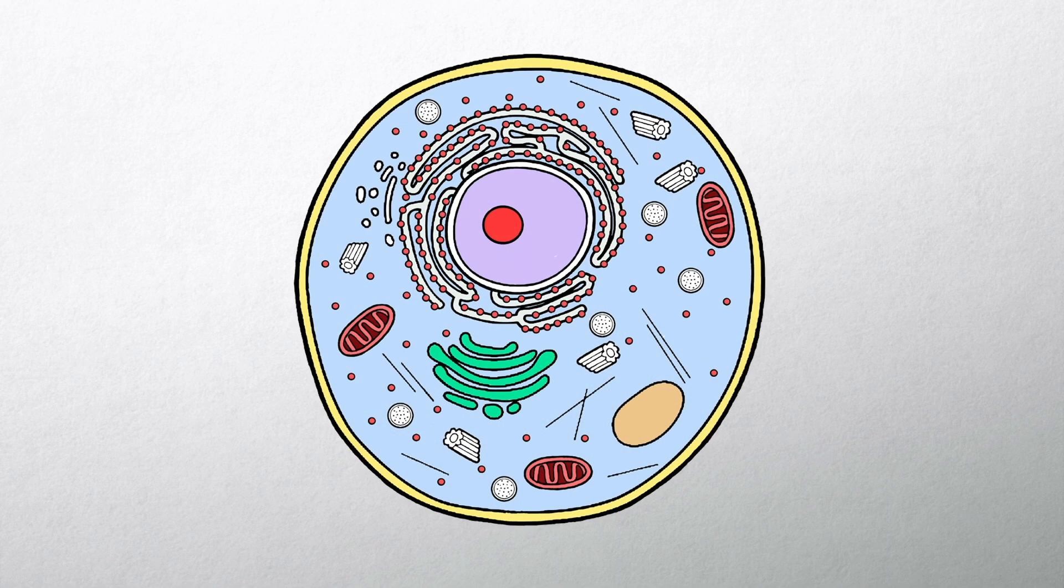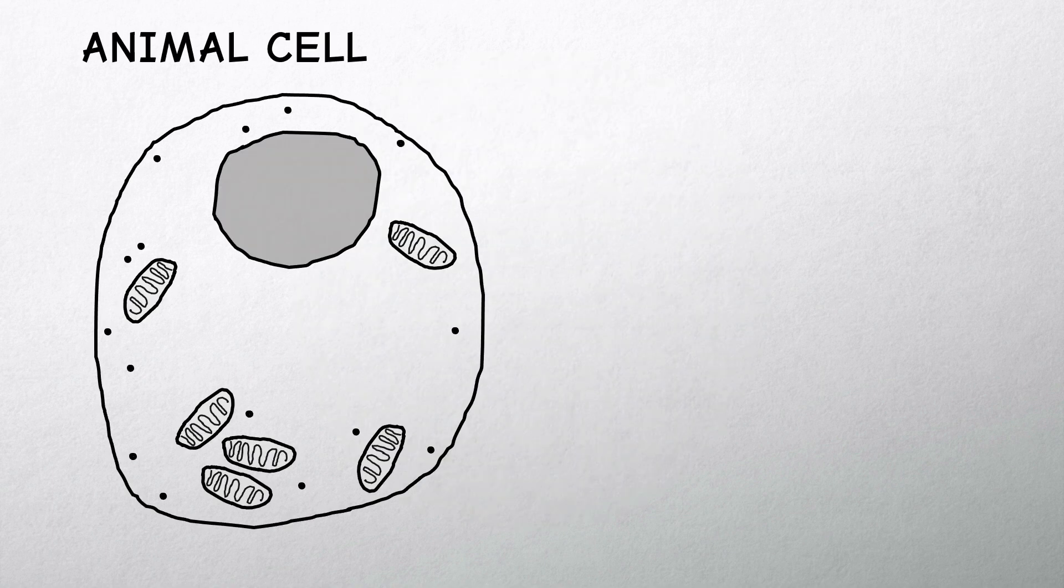Animal cells are complex structures made up of many different parts or organelles but we are just going to focus on a few.